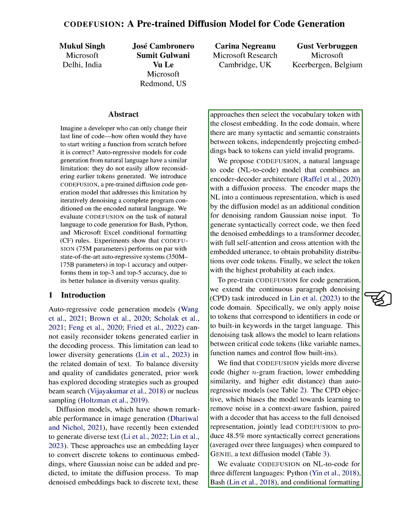Our system produces more diverse code than auto-regressive models. It also produces 48.5% more syntactically correct generations when compared to Genie, a text diffusion model.